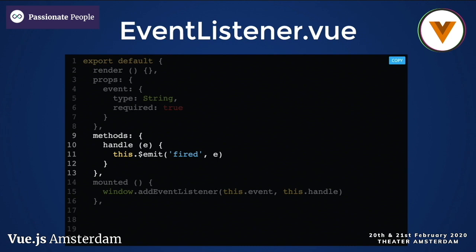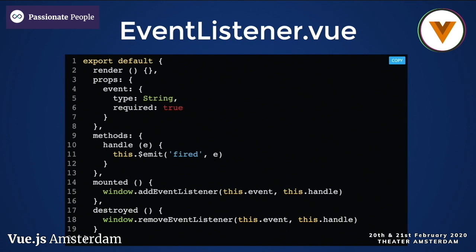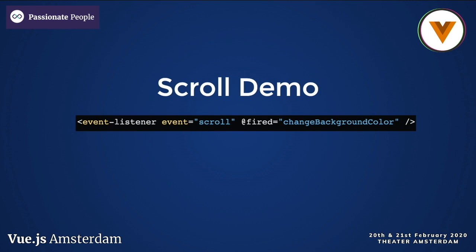Whenever the event is fired, it will invoke the handle method on this component, which is responsible for notifying the parent by emitting a custom event. And as with many things in life, we have to clean up after ourselves — so in the destroyed lifecycle hook, we remove the event listener. And this is all we need to create this awesome renderless event component.